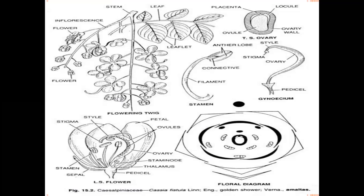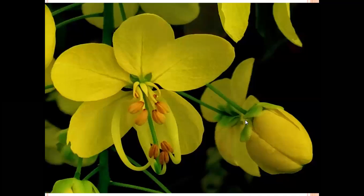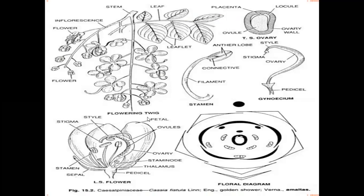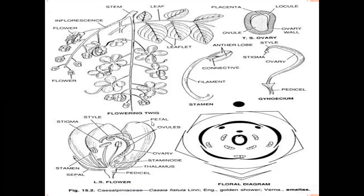Flowers are heterochlamydous — calyx is green in color while corolla is colorful, mainly yellow. Flowers are pentamerous (five petals and five sepals) and large in size. They are perigynous, meaning the remaining floral parts — calyx (sepals), corolla (petals), and androecium — are developed on the lateral side of the ovary, giving a half superior or half inferior ovary.